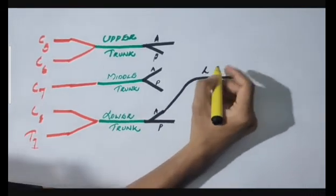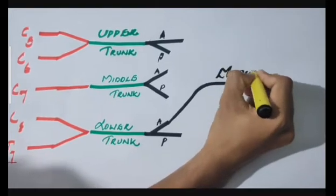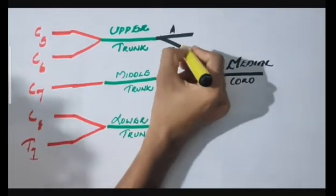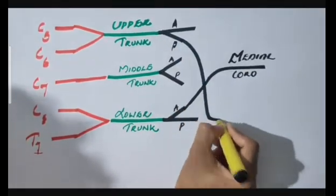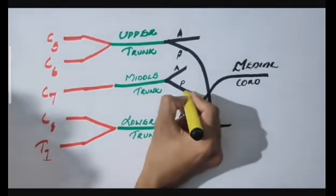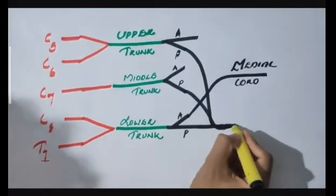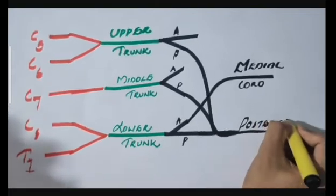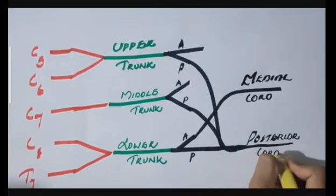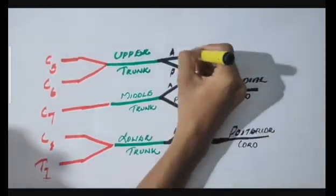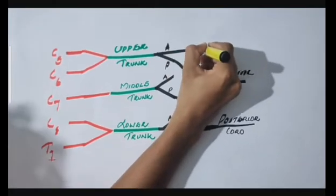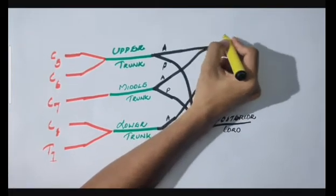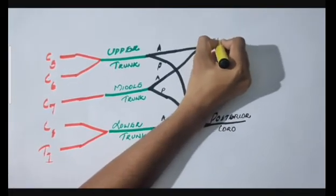These six divisions then regroup to form three cords. The anterior division of the lower trunk forms the medial cord. Here is your medial cord. Then all the posterior cords of three trunks join to form the posterior cord. The anterior divisions of the upper and middle trunk join to form the lateral cord. Here is your lateral cord.